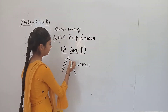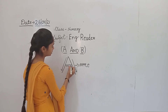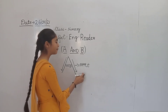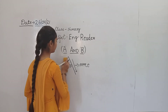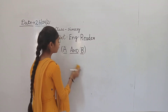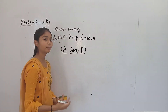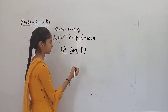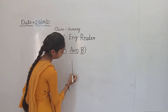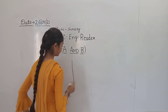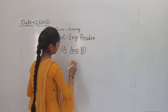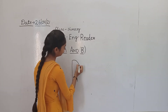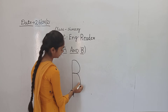This is slanting line. This is slanting line. This is sleeping line. What is A for? A for apple. Apple means save. What are you learning? A for apple. A for apple.